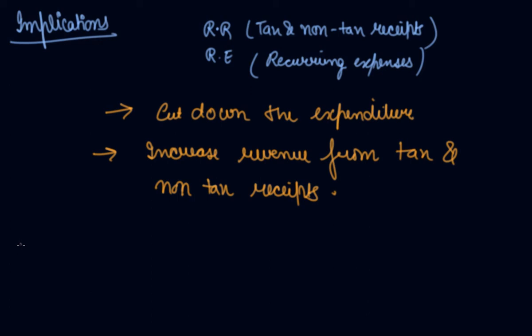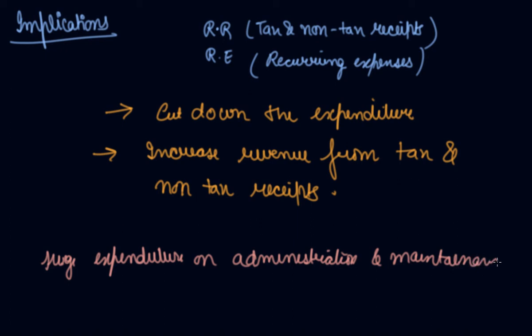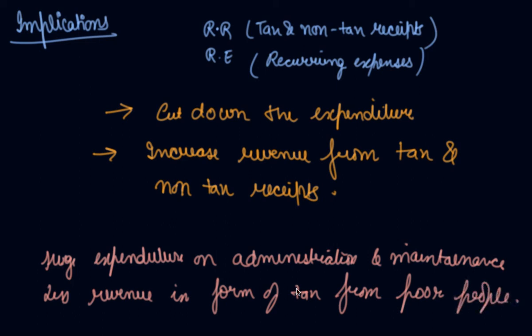In this case, government suffers from revenue deficit as there is huge expenditure on administration and maintenance activities which are recurring in nature, and there is less revenue in the form of tax from poor people. Government cannot force poor people to pay heavy tax, so the government is compelled to be in high revenue deficit.